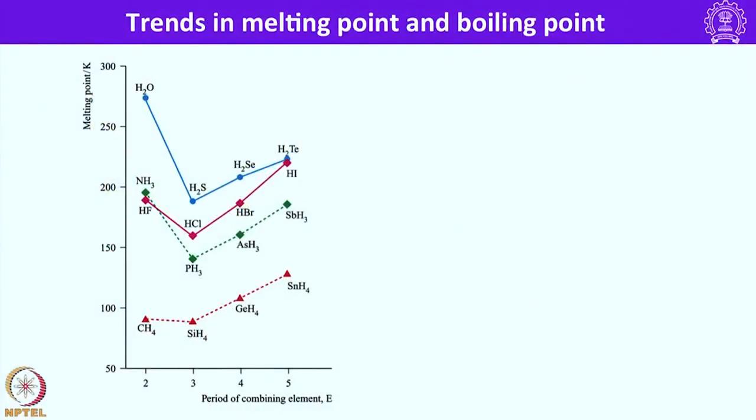Let us analyze these trends. Let us look into the melting points of several hydrides of group 14 to group 17. I have listed here for example CH4 methane, silane, germane and stannane. And similarly for group 15 ammonia, phosphine, arsine and stibine. And in case of group 16 water, hydrogen sulfide, hydrogen selenide and hydrogen telluride are given.